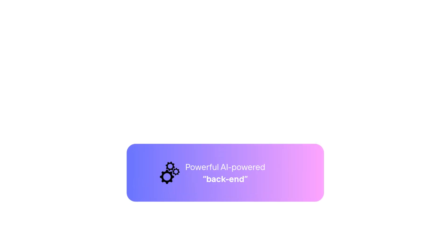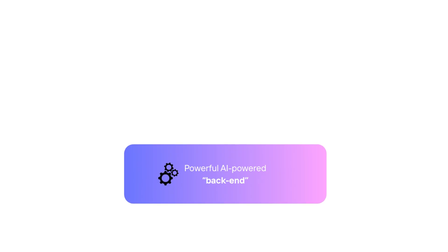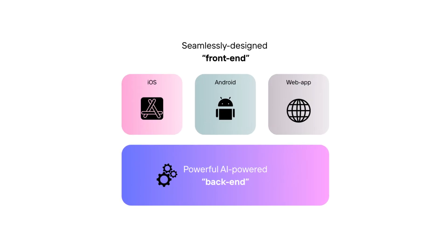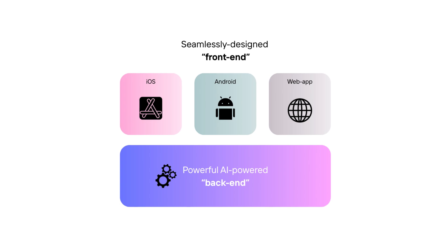PhotoRoom folk have been busy building two core elements of the PhotoRoom experience for the past five years: a powerful AI-powered backend — the code you don't really see, the stuff that works in the background — and a seamlessly designed frontend, the flows and buttons you interact with in our apps.